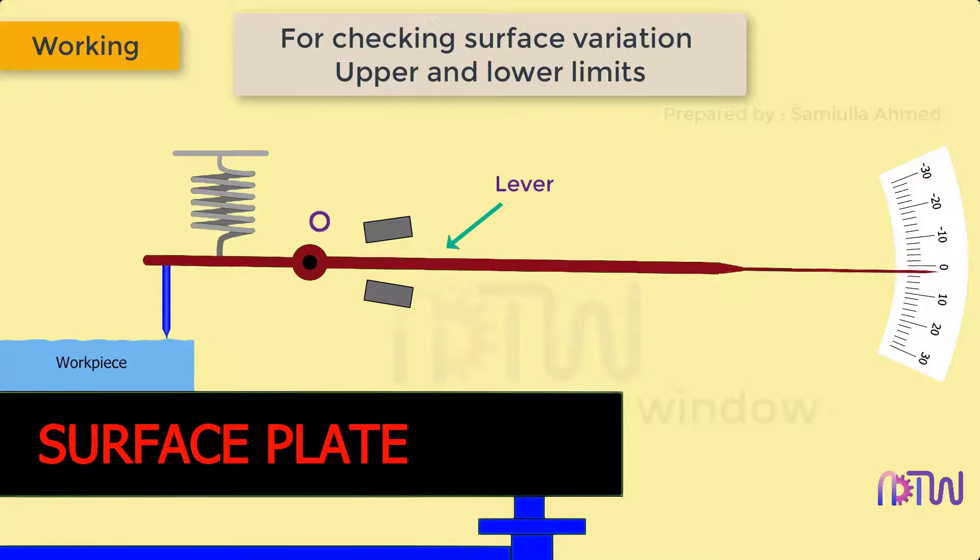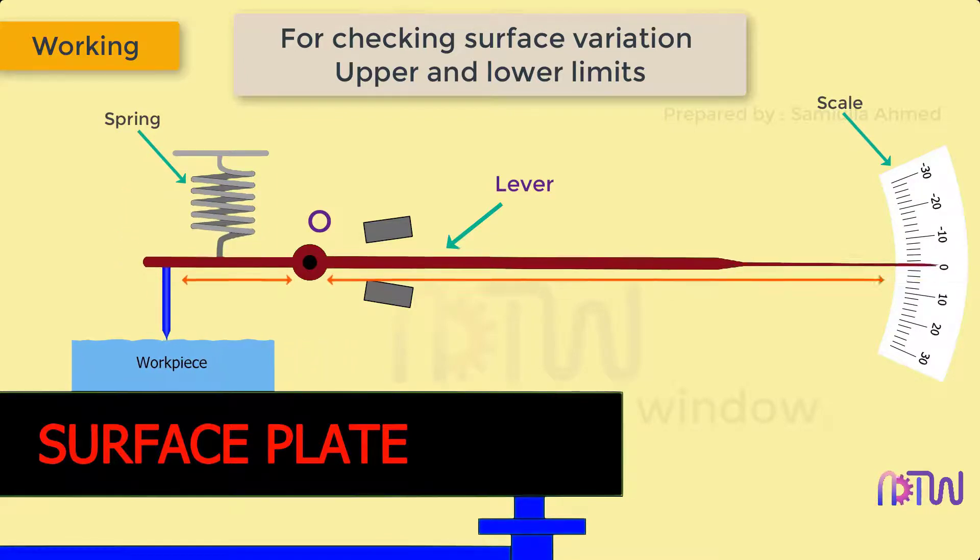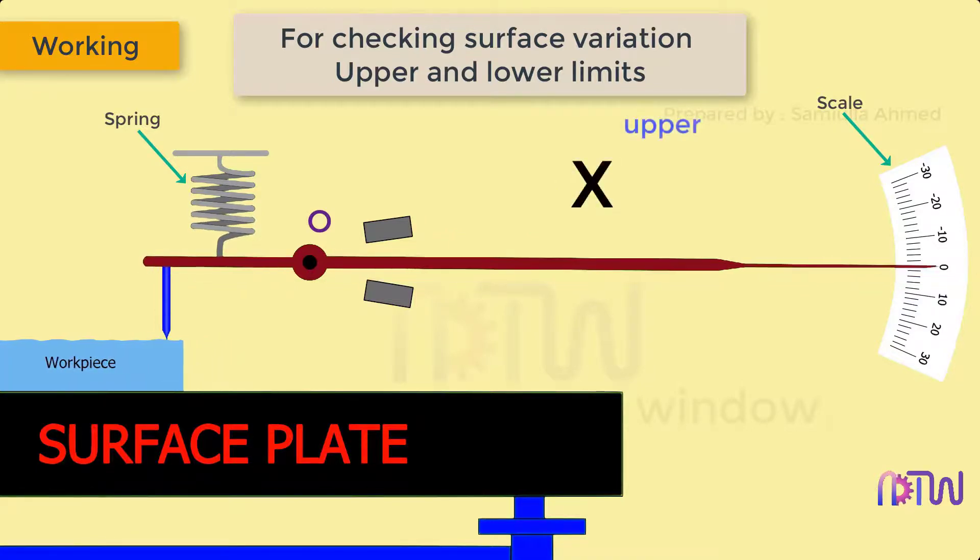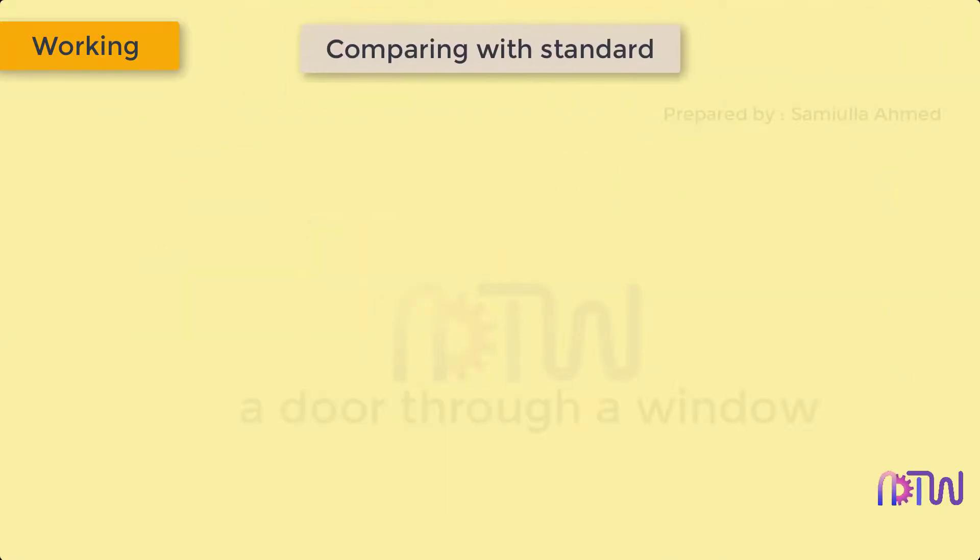A compression spring limits the measuring pressure. The magnification achieved depends upon the length of the lever on both sides of the pivot. Thus it gives the variation on the surface which can be represented as upper and lower limits. Another way of using this comparator is direct comparison of the component with a standard.